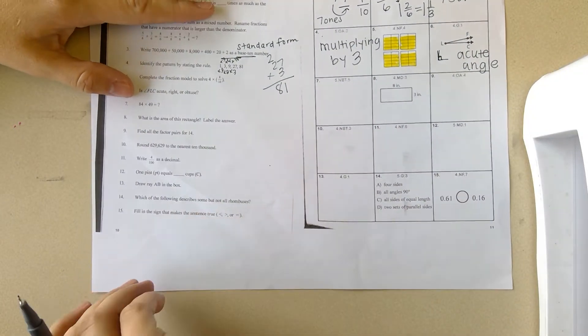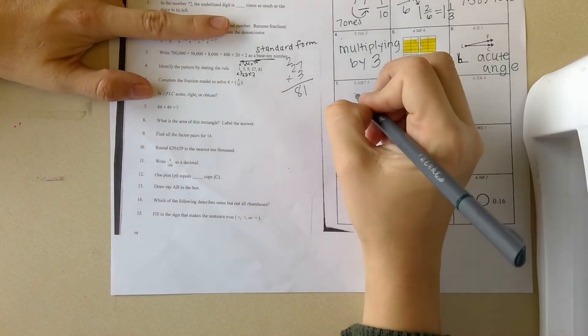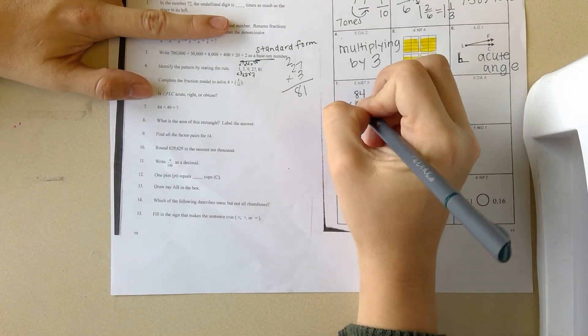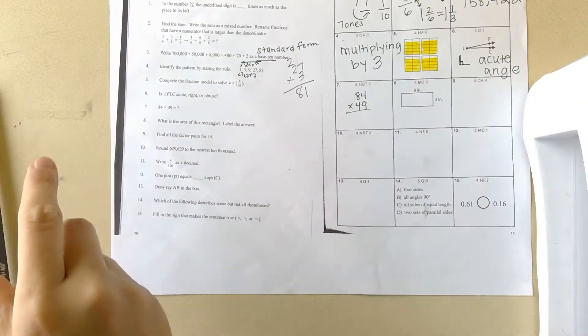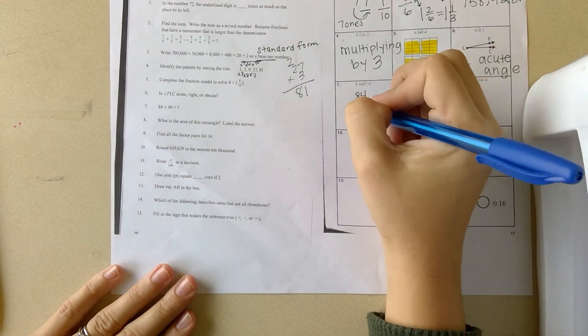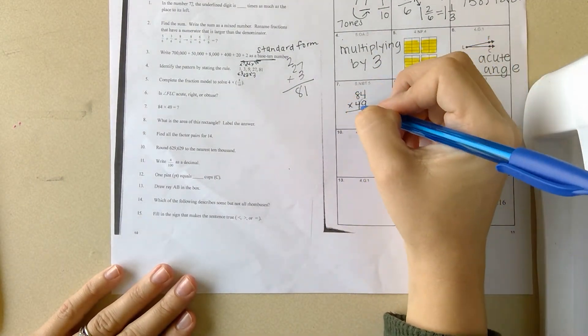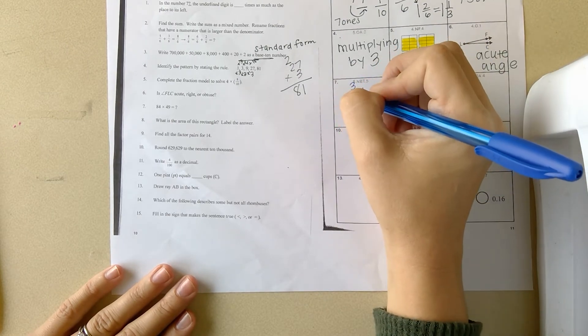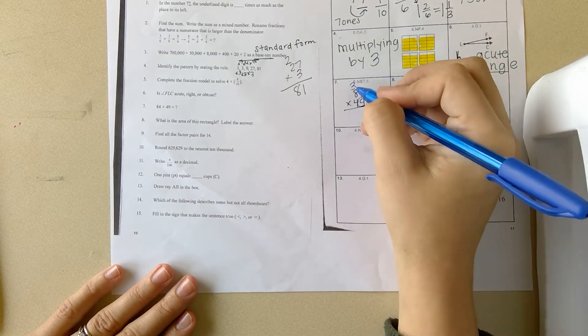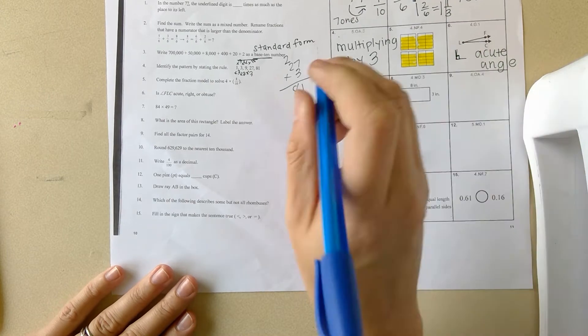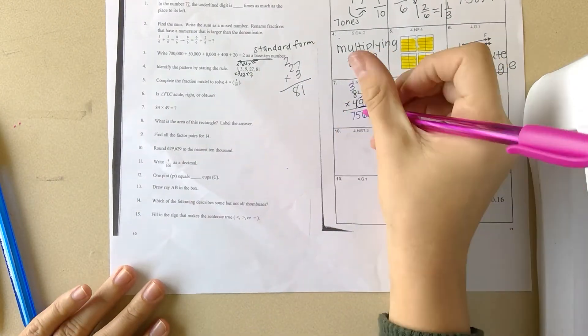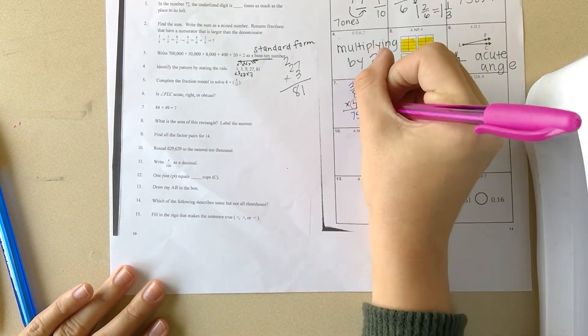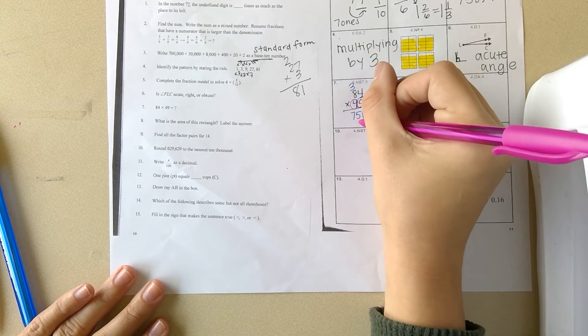Let's look at number seven: 84 times 49. I'm starting multiplying with my ones, which is my 9. Nine times 4 is 36. Eight times 9 is 72 plus the 3 is 75. You need that place value holder.